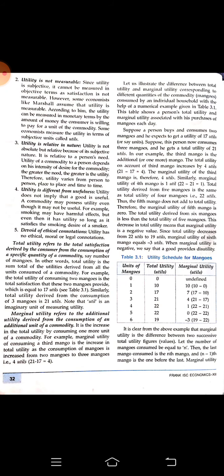This means as the person is consuming more and more of the same commodity, the utility is decreasing. After the fifth mango it became 0, and the sixth went to a negative point — the person doesn't want to have that mango anymore. As we consume more of a commodity, the utility keeps on diminishing or decreasing.